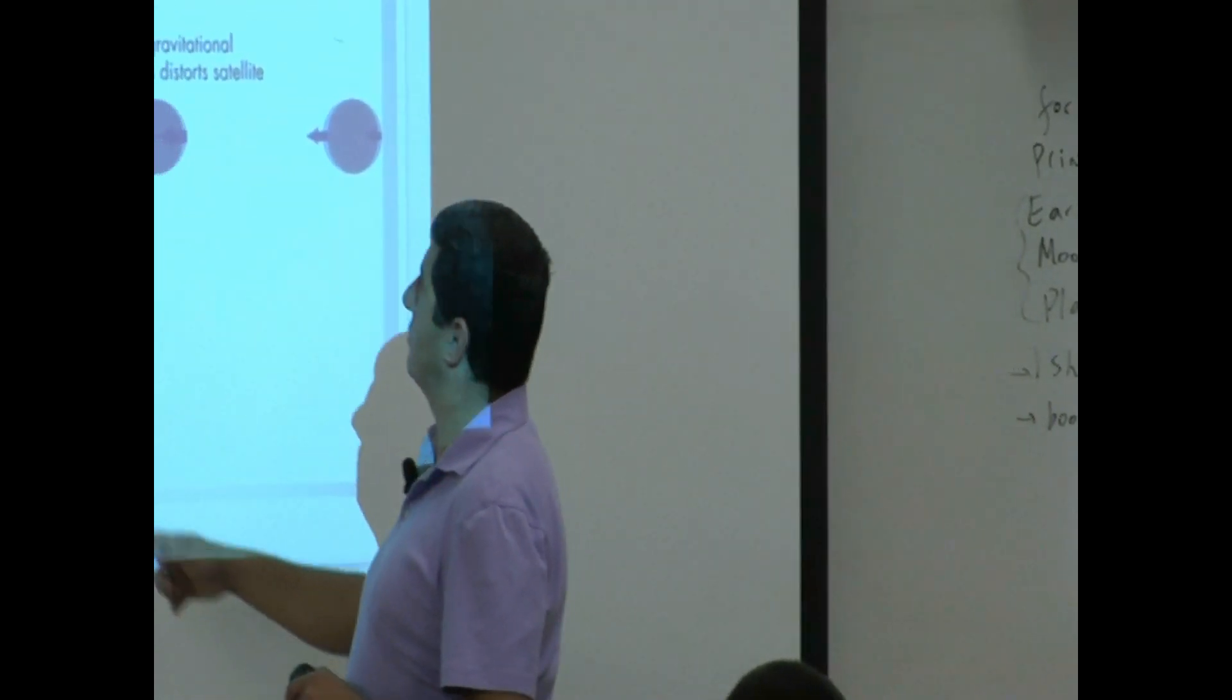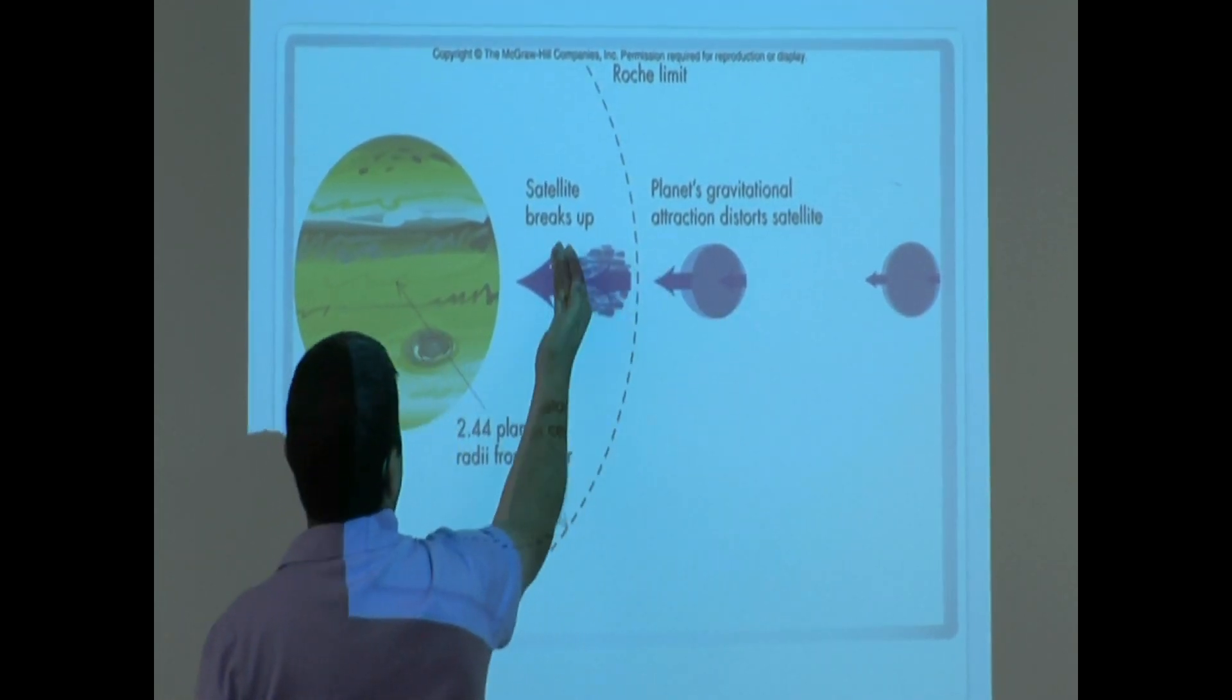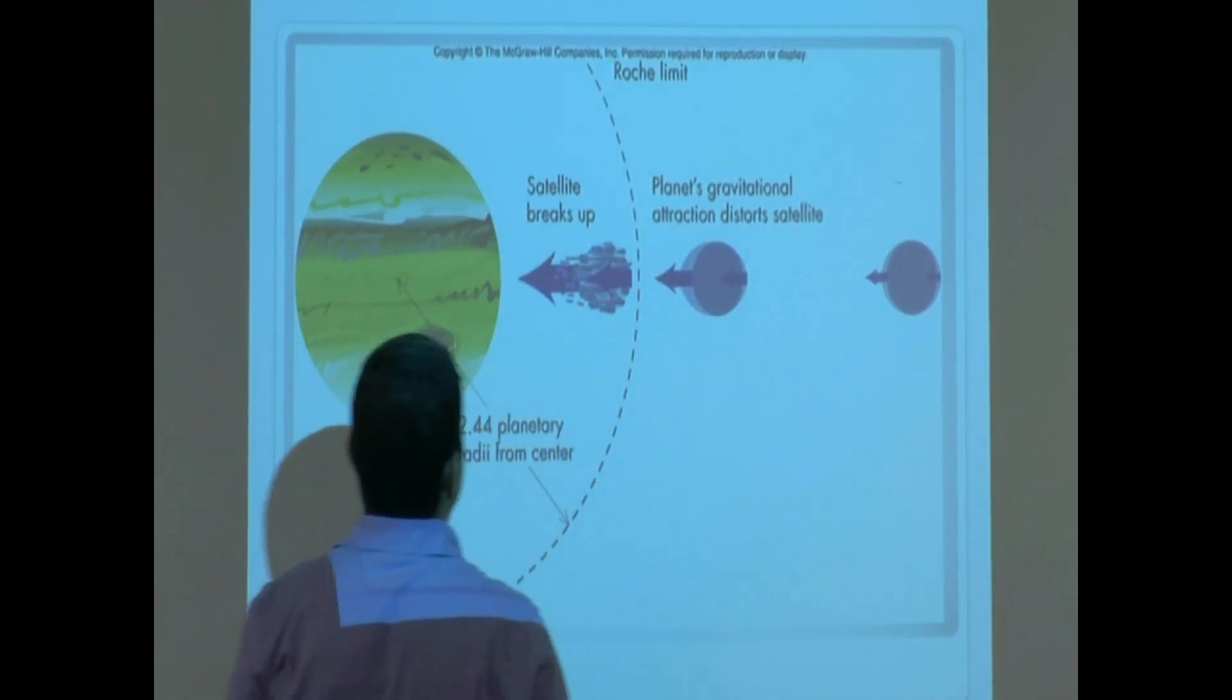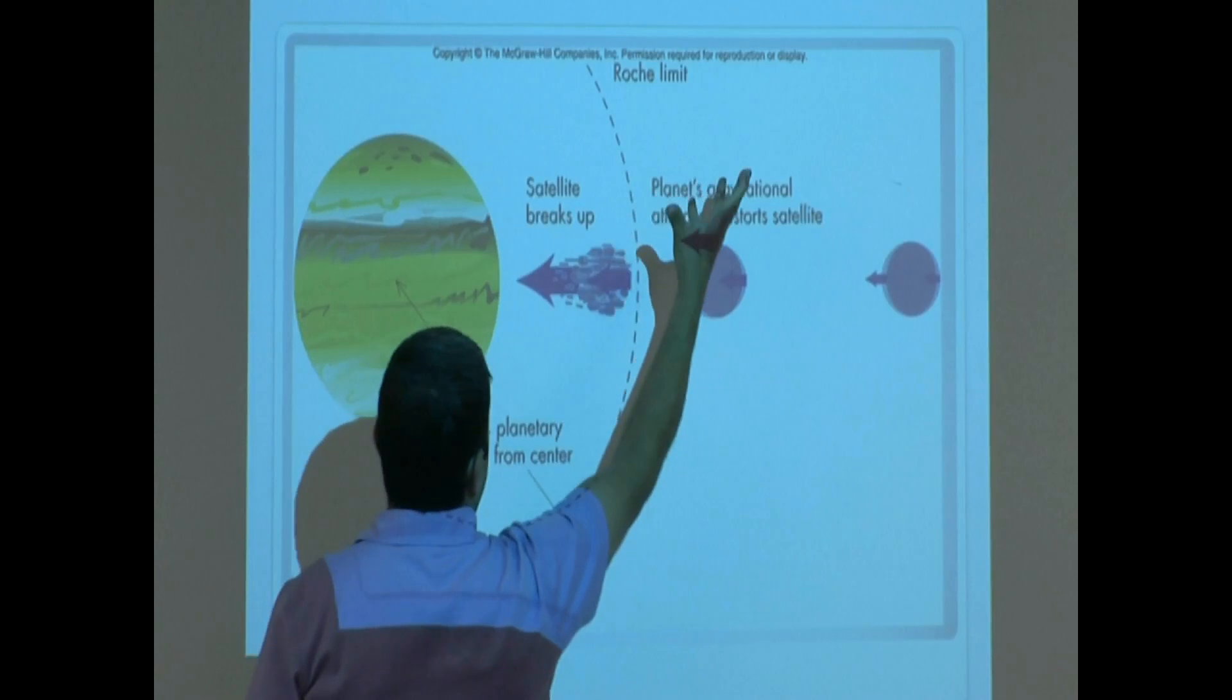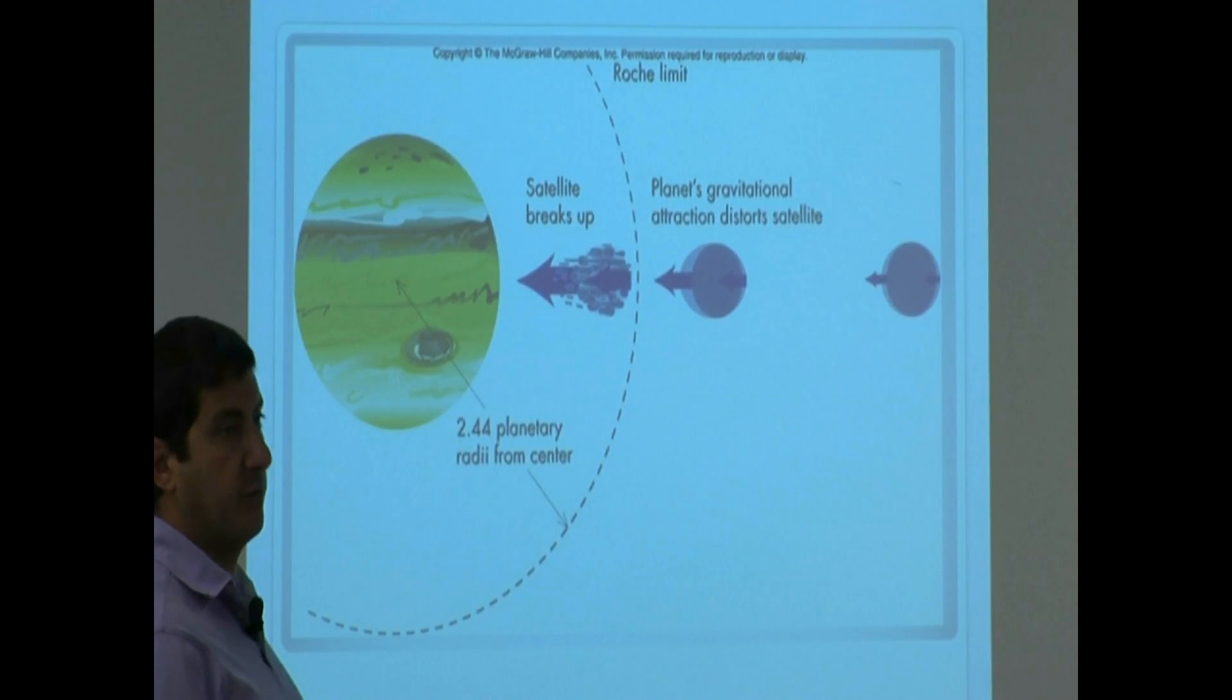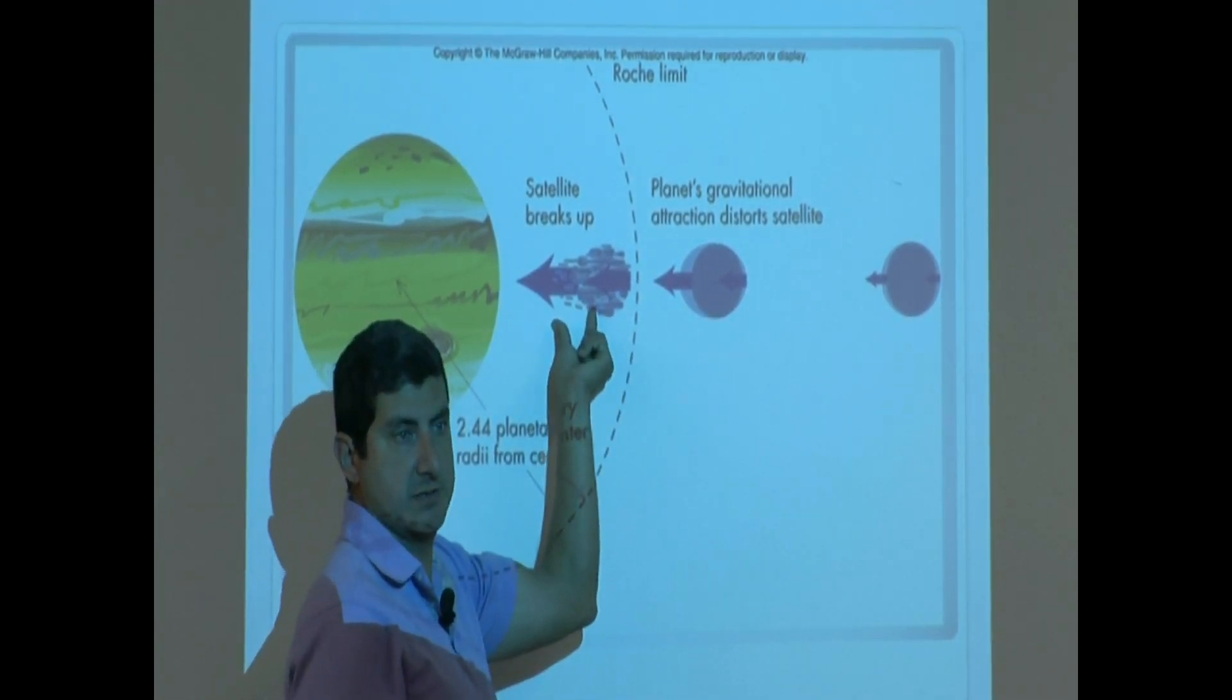This is the one that we were talking about earlier, the Roche limit. When the moon comes inside of the Roche limit, it breaks up. The gravitational effect of the planet breaks that up and it starts forming into a ring, okay? That's one way that you can form rings, is when the moon comes too close to a planet.